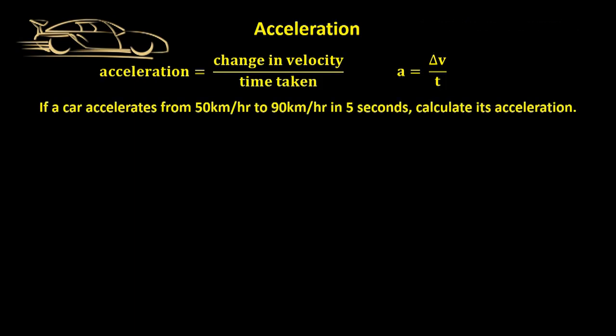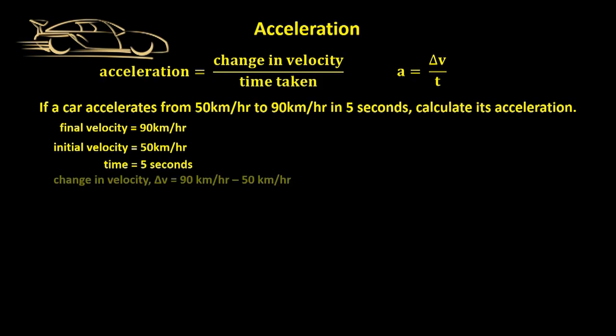If a car accelerates from 50 km per hour to 90 km per hour in 5 seconds, calculate its acceleration. The final velocity equals 90 km per hour, the initial velocity was 50 km per hour, and the time taken was 5 seconds. The change in velocity — delta V — equals 90 km per hour minus 50 km per hour, which equals 40 km per hour.